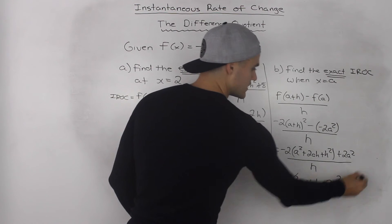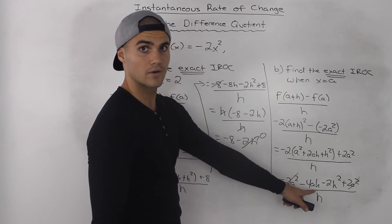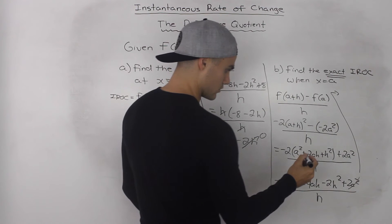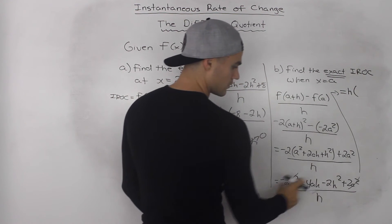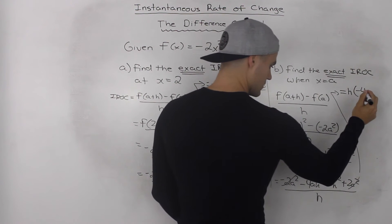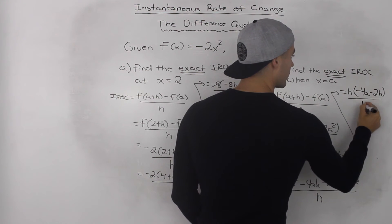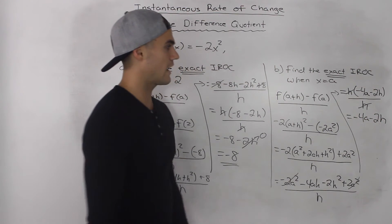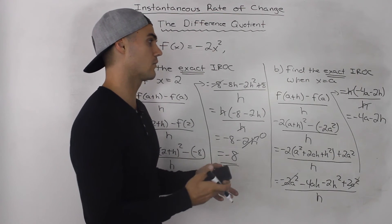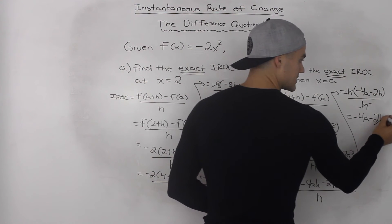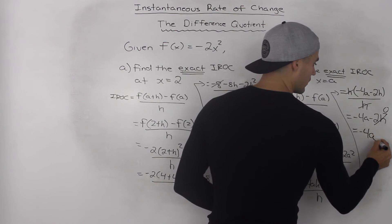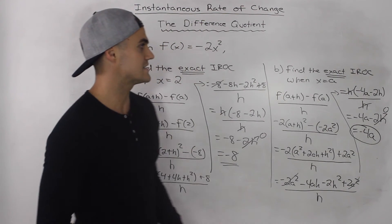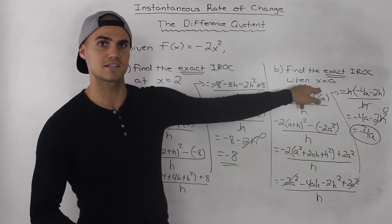Notice the -2a² and +2a² cancel out. Then we can factor out an h from the numerator, giving h(-4a - 2h) all over h. The h's cancel out and we're left with -4a - 2h. Plugging in 0 for h as it approaches 0, we're left with -4a as our general expression for the instantaneous rate of change at any point x = a.